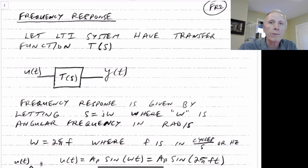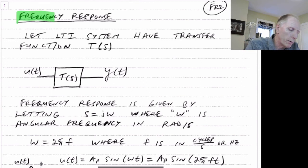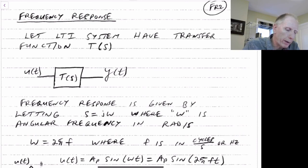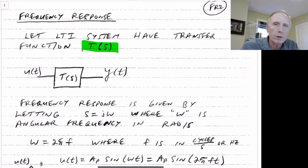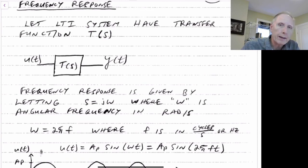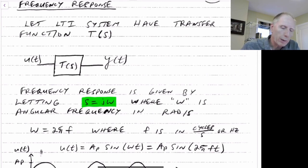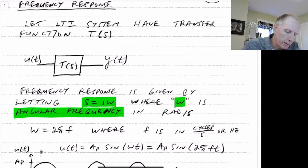So now that we've looked at the transfer function, we'd like to look at the frequency response for a system. Consider a case where we have an LTI system — we'll use T of s as representing the transfer function rather than h of s. So we have a linear time-invariant system with a transfer function T of s. The frequency response is given by letting s equal j omega. Remember, T of s is a ratio of two polynomials in s, so we let s equal j omega, where omega is the angular frequency in radians per second.